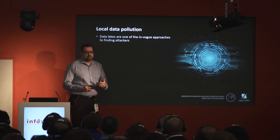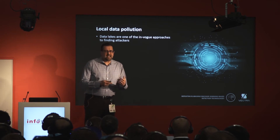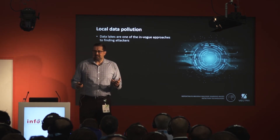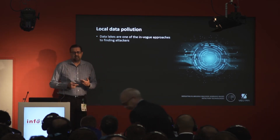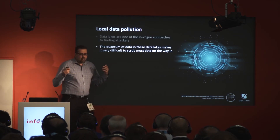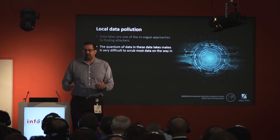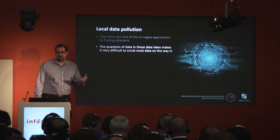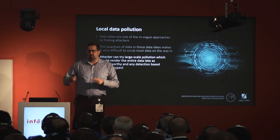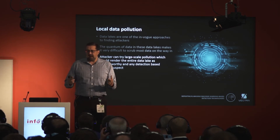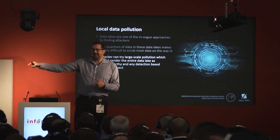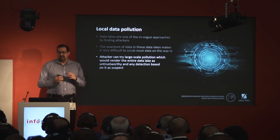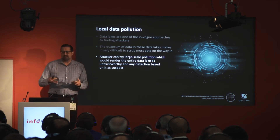There's also local data pollution. If you're inside someone's network, data lakes — a large distributed file system where enterprises dump all their data — are the target. When you're collecting 500 gigabytes of data a day from endpoints and network devices, it's very hard to scrub that data on the way in. As an attacker, you use two or three compromised nodes to flood the data lake with suspect data, while your actual attacking node is something else entirely — a sleight of hand that makes the data lake less trustworthy because it now has dirty data inside.